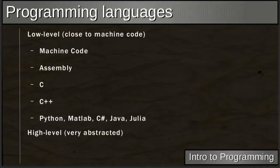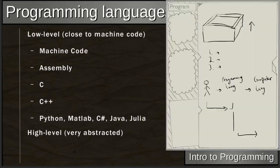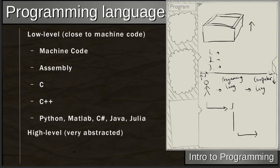Programming languages range from low-level to high-level. Low-level means closer to machine code. High-level is closer to how we think — more abstracted from the computer language. Low-level is more directly what the computer wants to interpret.